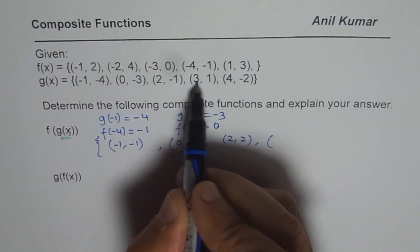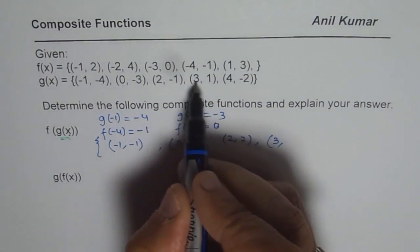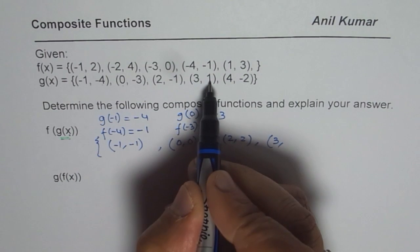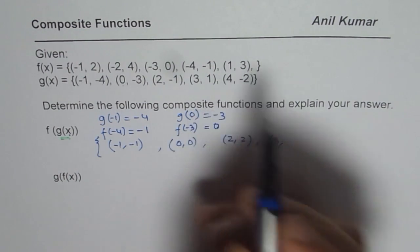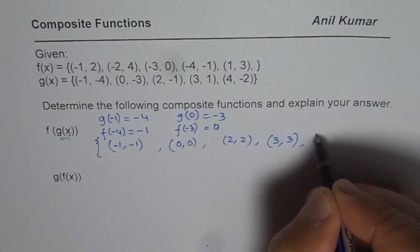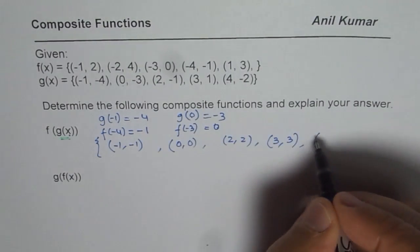g of 3 is 1. So for input 3, g of 3 is 1, and the output should be f of 1. f of 1 is 3. We get (3, 3) as our answer.